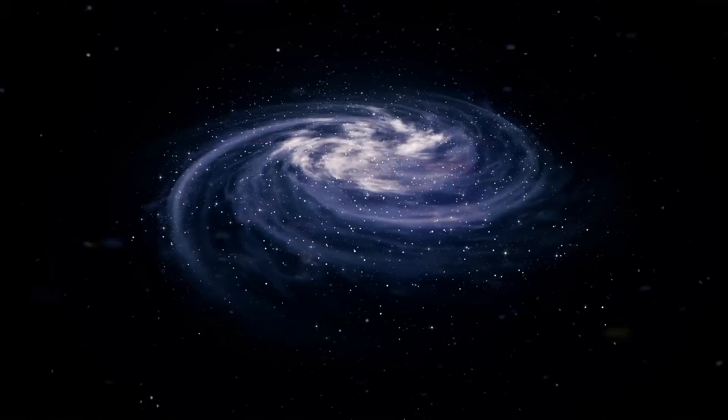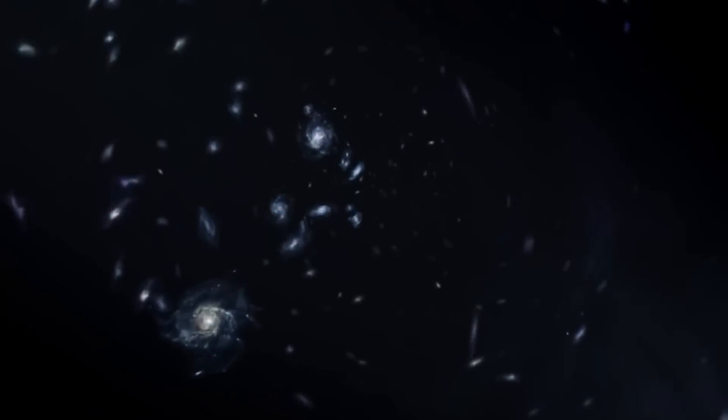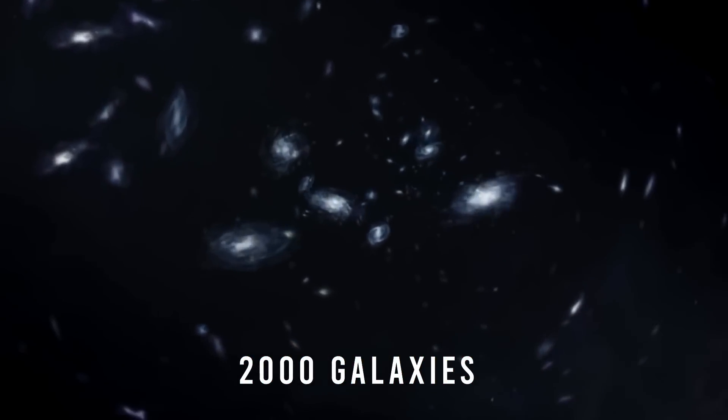It has been also theorized that such voids are created by mergers of smaller voids. If we calculate roughly about one galaxy every 10 million light years, then there should be 2,000 galaxies in the Boötes Void.